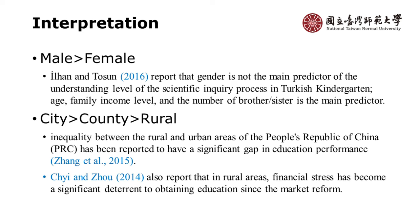The interpretation is similar to frequentist analysis — male is better than female. We know from a study in Turkey that gender is not the main predictor of kindergarten-level scientific inquiry process, where males and females are basically similar. But in our case in China, gender is a main predictor and is significant. For city, country, and rural, studies in China also show gaps in education performance.